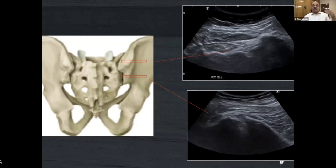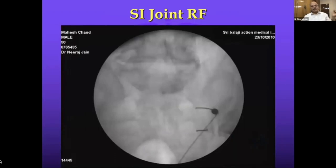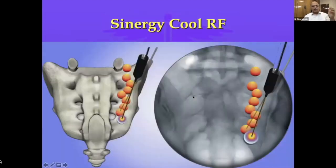The injection technique uses one to two ml and can be done under ultrasound — especially in pregnant ladies — with a needle going from medial to lateral. For SI joint RF, S1 is the main contributor along with S2, and multiple RF lesions are placed around the foramen at S1, S2, sometimes S3. You must also address L5, sometimes even L4. Cool RF with its bigger lesion helps ensure you don't miss the nerve.